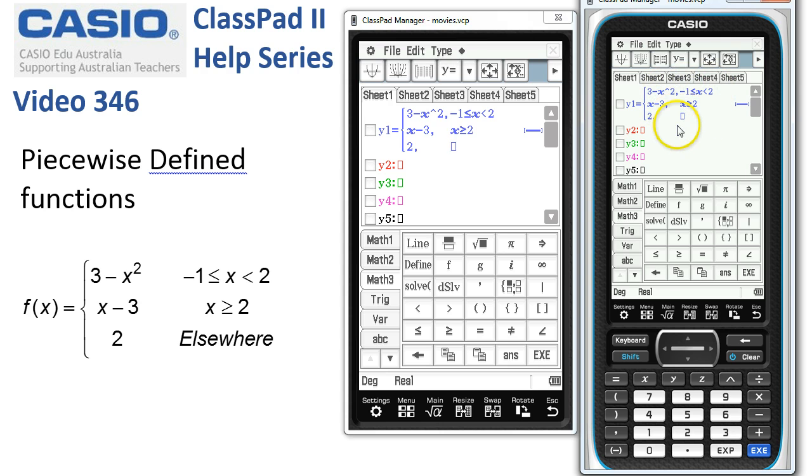So basically ClassPad will work out that if we don't put anything in this one, the function is always worth 2.